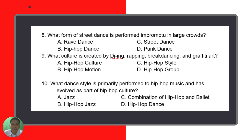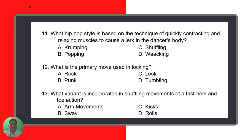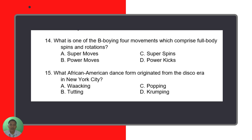Number ten: What dance style is primarily performed to hip-hop music and has evolved as part of hip-hop culture? Number eleven: What hip-hop style is based on the technique of quickly contracting and relaxing muscles to cause a jerk in a dancer's body? Number twelve: What is the primary move used in locking? Number thirteen: What variant is incorporated in shuffling movements of a fast heel and toe action? Number fourteen: What is one of the b-boying four movements which comprises full body spins and rotations? And number fifteen: What African-American dance form originated from the disco era in New York City?